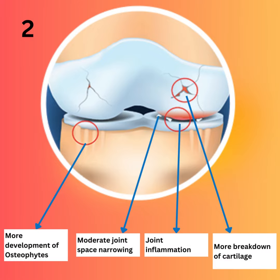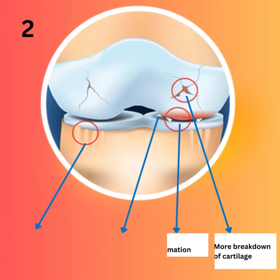In stage 2, there is more breakdown of cartilage, moderate joint space narrowing, joint inflammation, and more development of osteophytes.